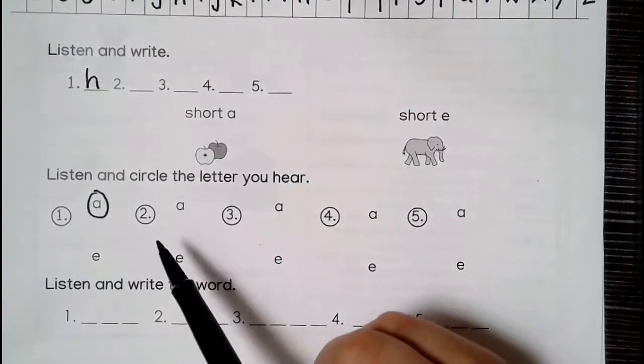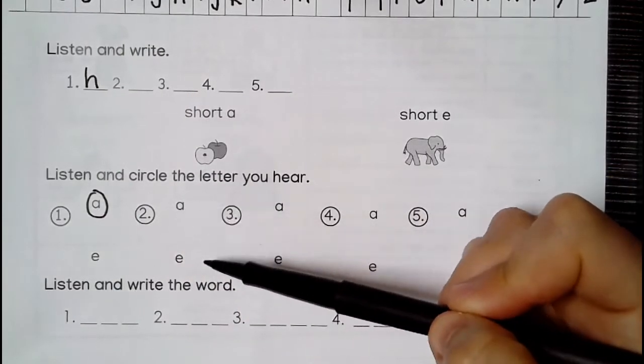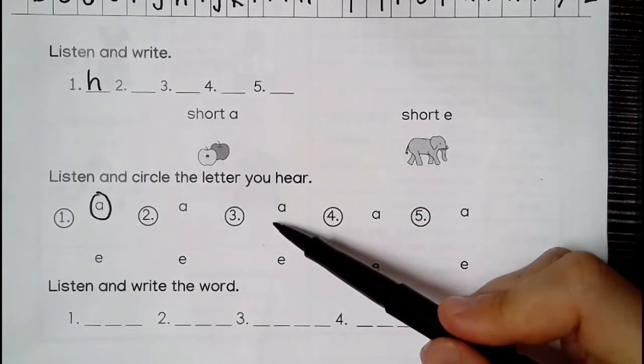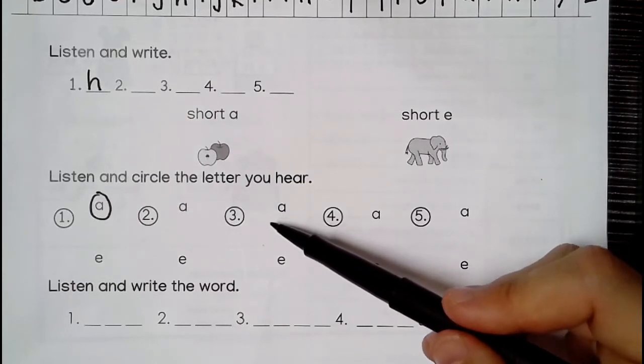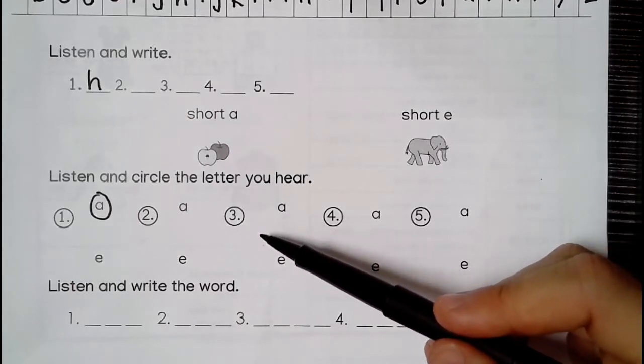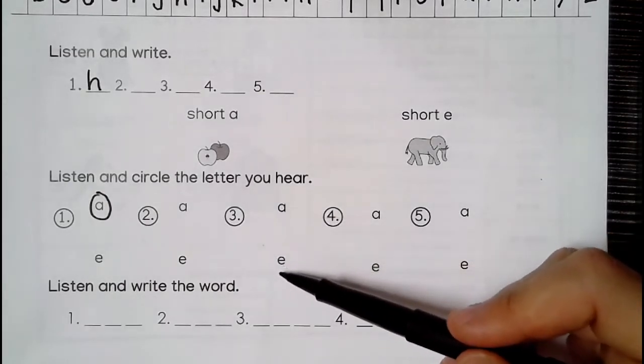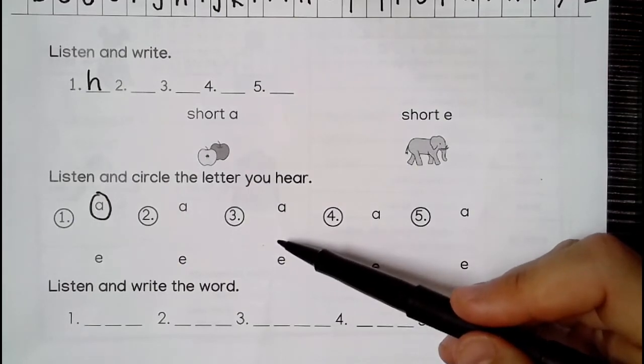Number two. A. A. Is it A or E? Up or down. Number three. Eh. Eh. Is it A or E? Up or down. Eh. Eh.